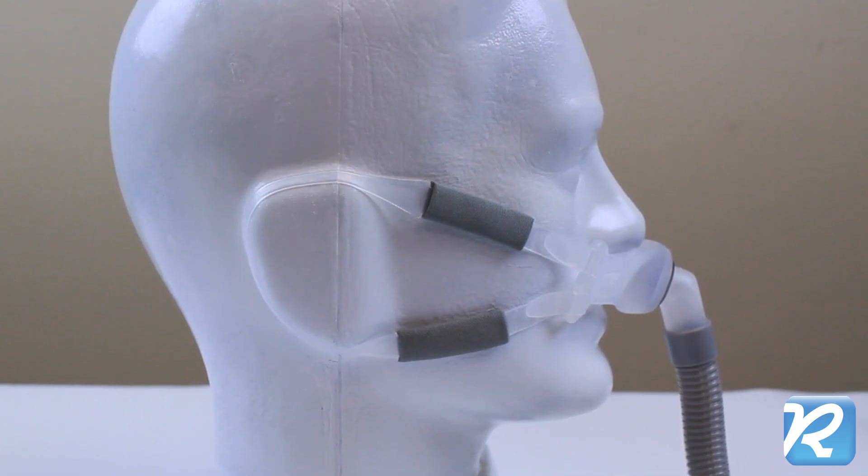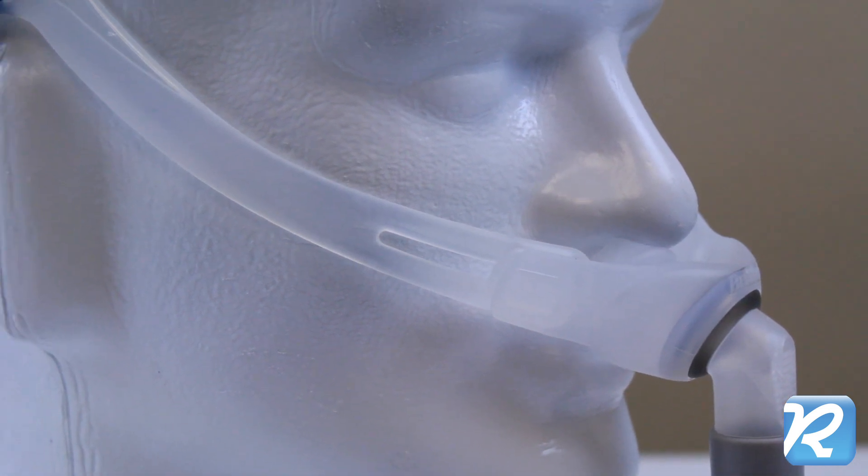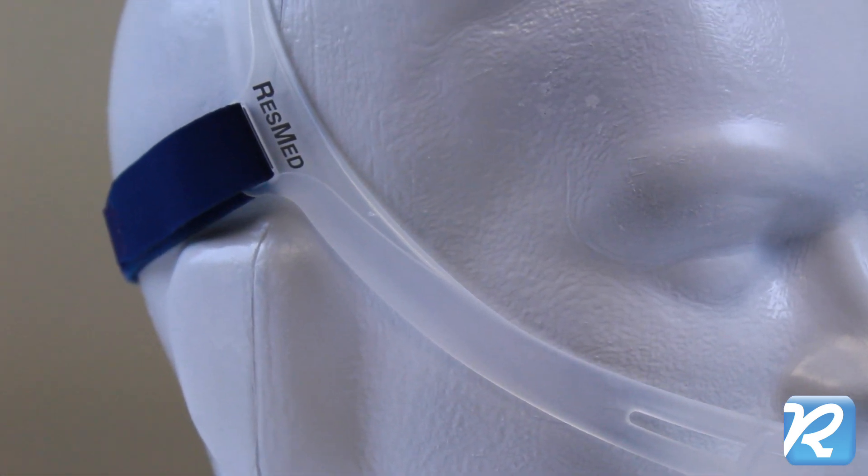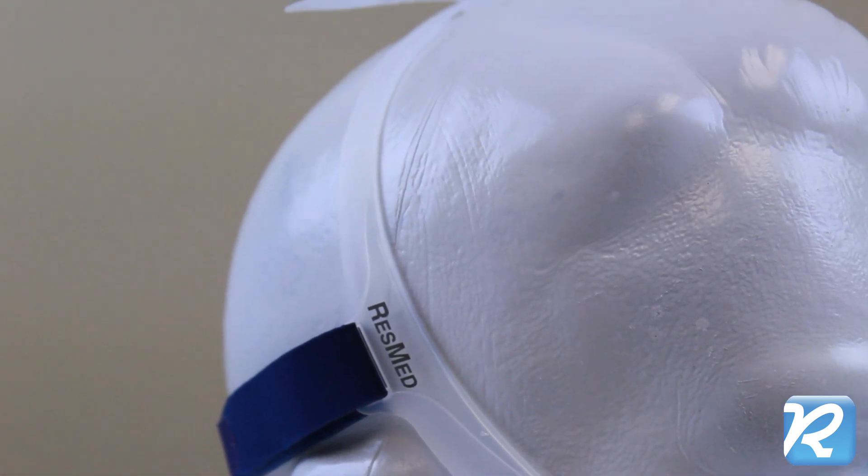The loops adjust over and under the ears with Velcro adjustments. The SwiftFX Bella Gray also includes the standard SwiftFX silicone frame and head strap.